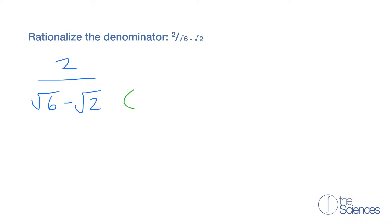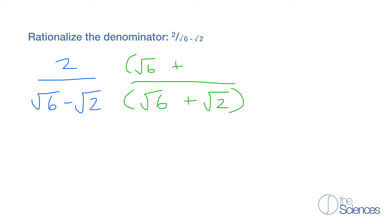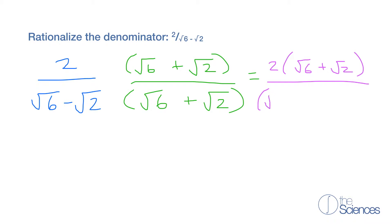We're going to multiply by the square root of 6 plus the square root of 2. And we're going to multiply the numerator also by the square root of 6 plus the square root of 2. So what we get is 2 times the square root of 6 plus the square root of 2, over the square root of 6 minus the square root of 2 times the square root of 6 plus the square root of 2.